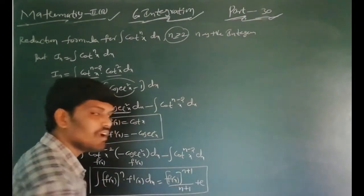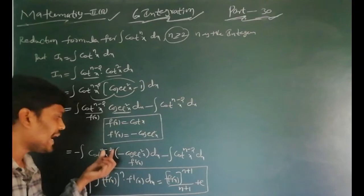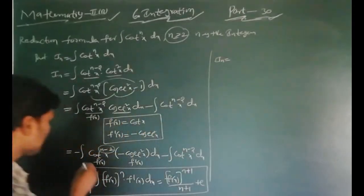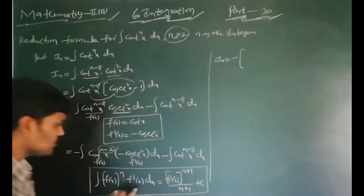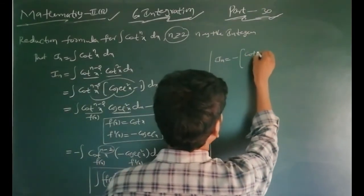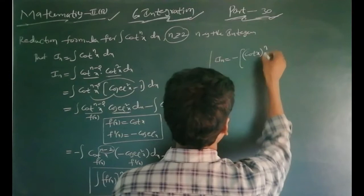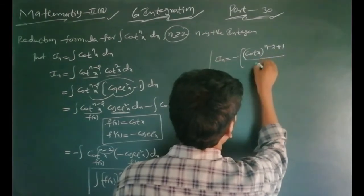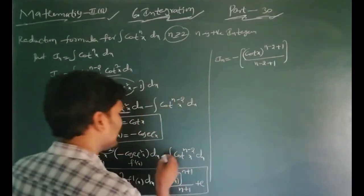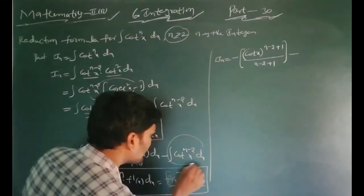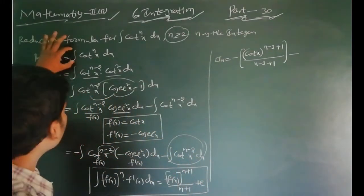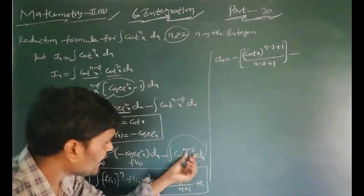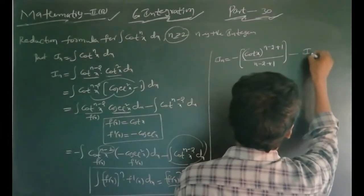This integration is in the form [f(x)]^n times f'(x) dx, which integrates to [f(x)]^(n+1) divided by (n+1) plus c. Here f(x) is cot x and the power n is (n-2). The integral of cot^n x is I_n, and the integral of cot^(n-2) x is I_(n-2).